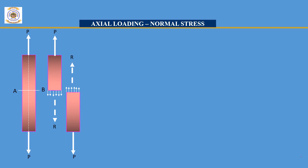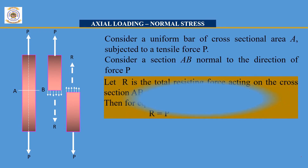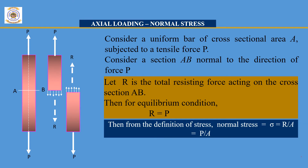In the first part, the load is acting in the upward direction and its respective resistance force is acting in the opposite direction, that is downward. In the second half, the load is acting downward whereas its resisting force is acting upward. From the definition of stress — resistance force divided by unit cross-sectional area — resistance force is R and cross-sectional area is A. To maintain equilibrium, resistance force equals the applied load, therefore stress equals P divided by A.